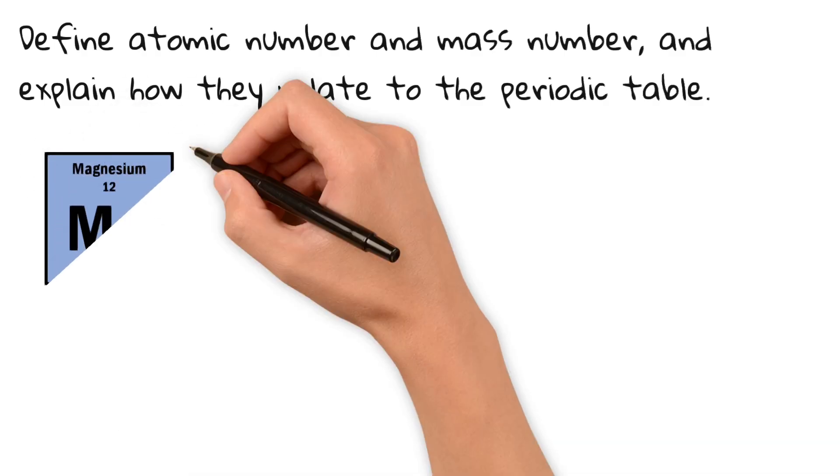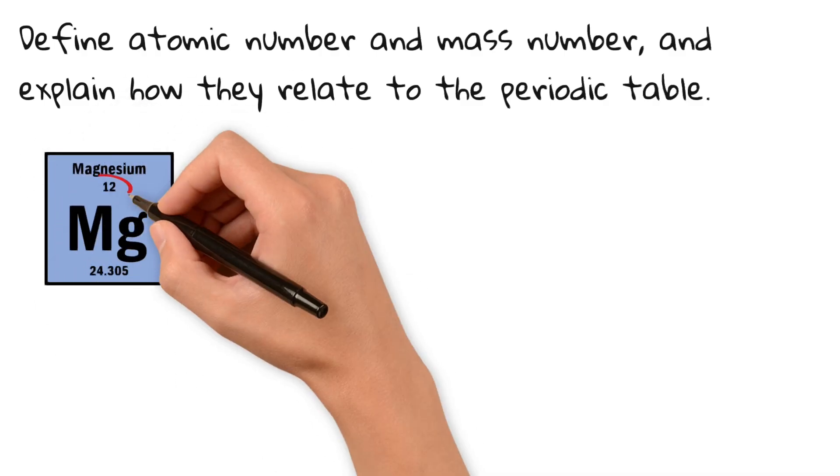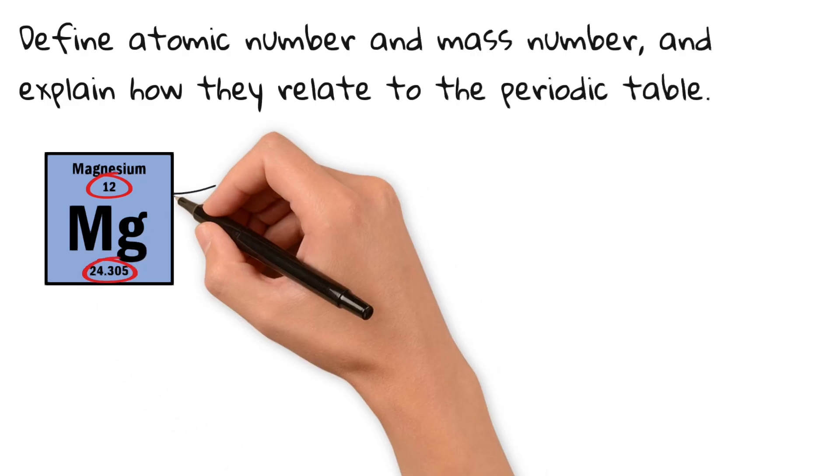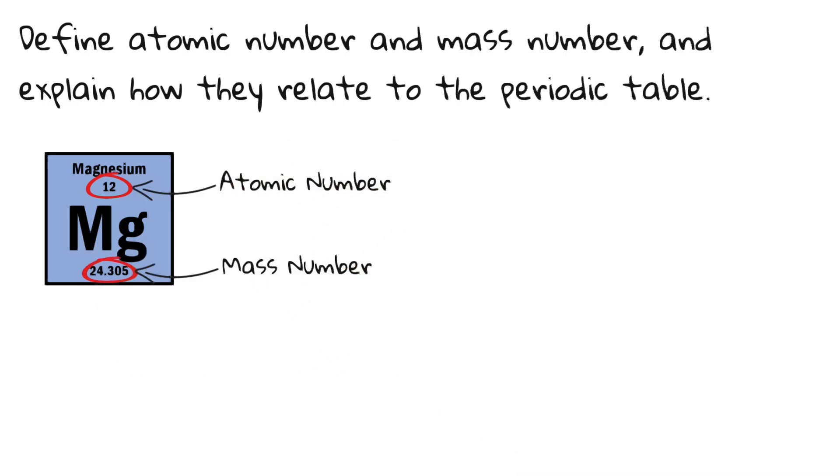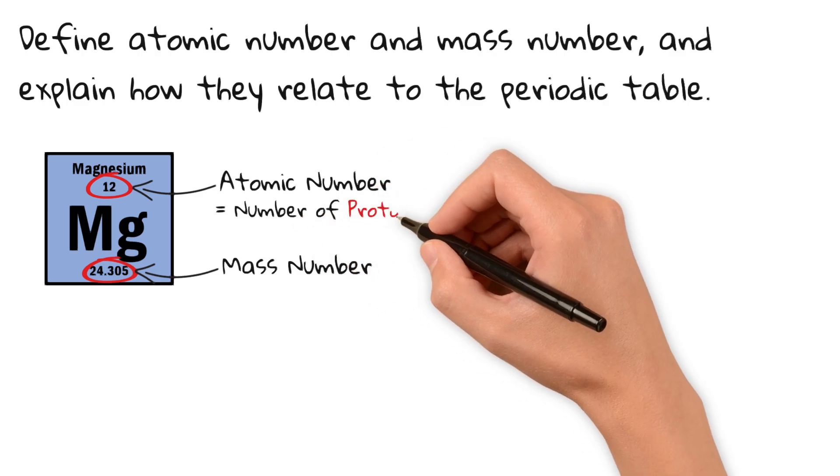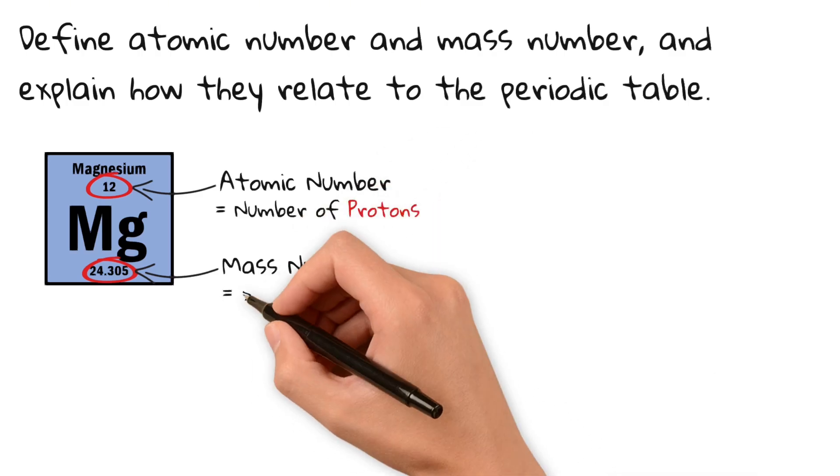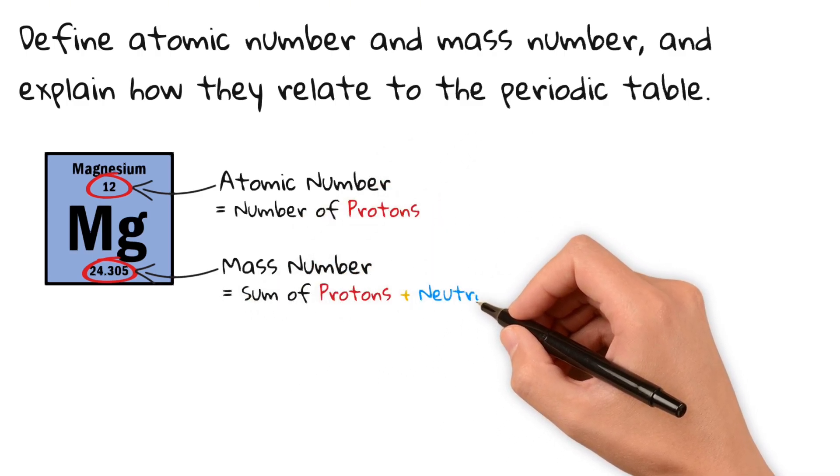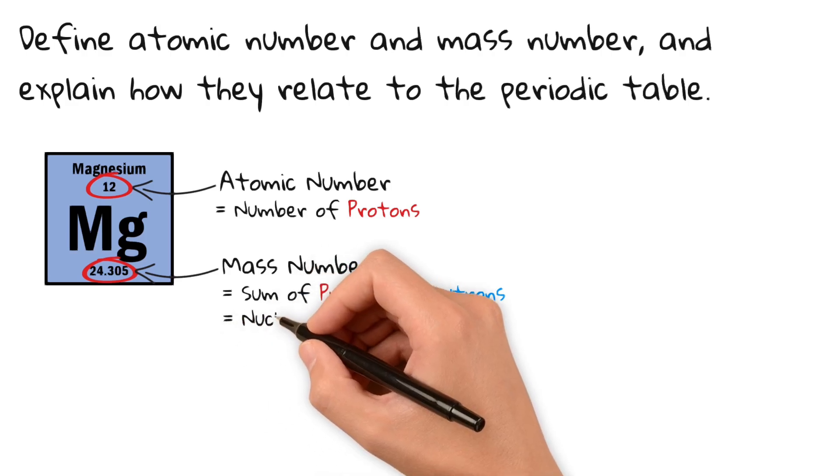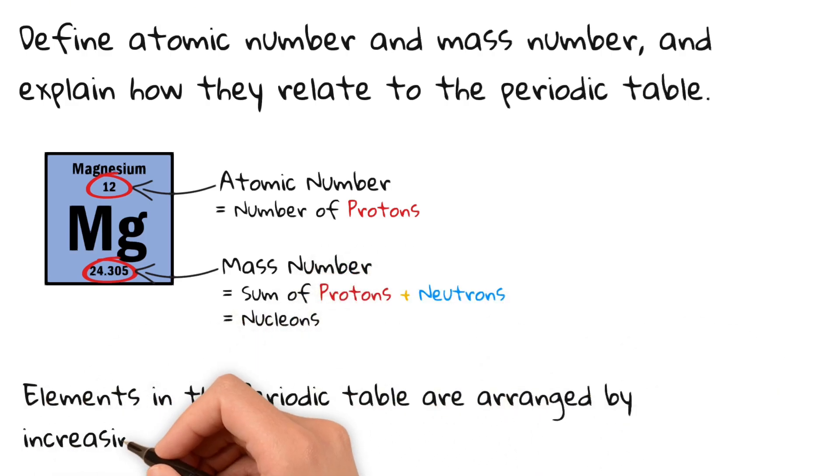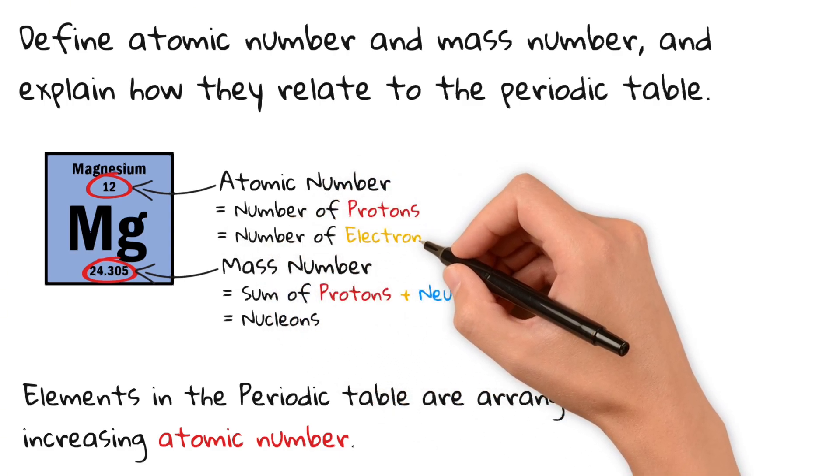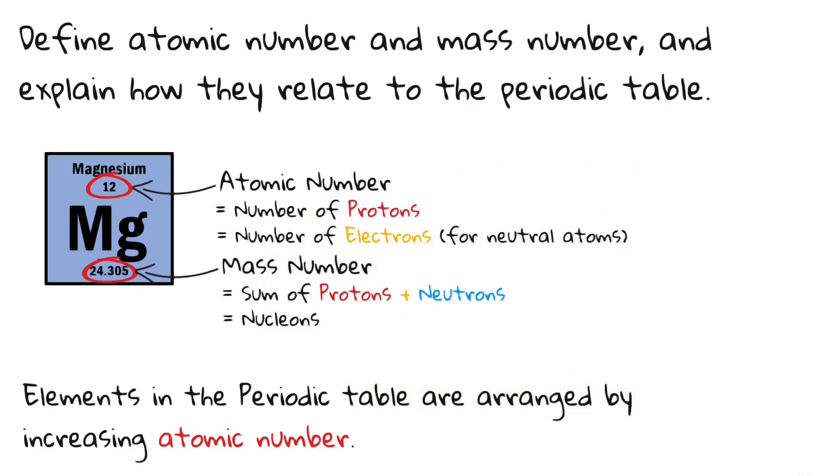When looking at any element in the periodic table we can see two numbers. The smaller number is the atomic number and the larger number the mass number. The atomic number is the number of protons in an element and the mass number is the sum of protons and neutrons, also called the nucleons. Elements in the periodic table are arranged by increasing atomic number. Pro tip.